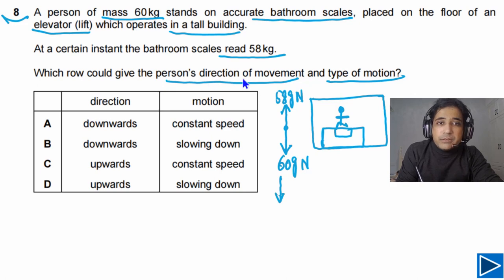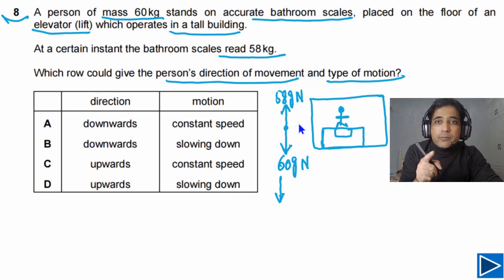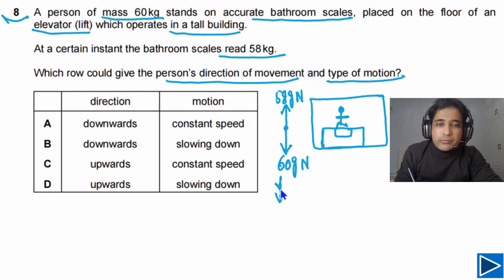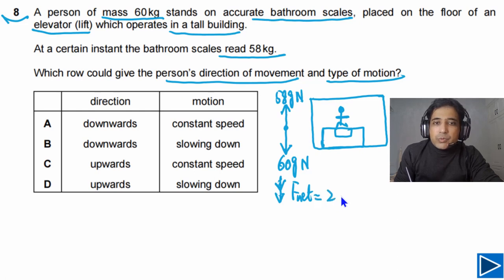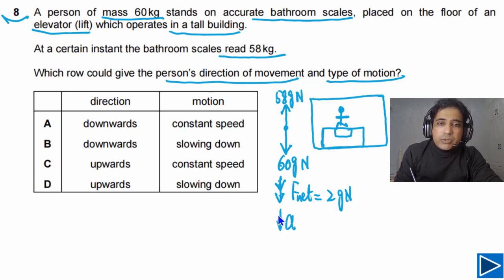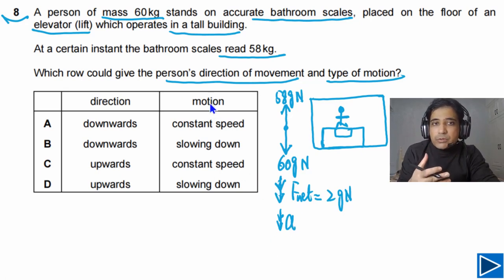From here we can find the resultant force acting on the person, since we need to determine the direction of movement. Drawing the free body diagram, the resultant force equals 2g newtons acting downwards. Since the resultant force is downward, the acceleration is also downward. So we have found the type of motion — the person is decelerating or accelerating downward.